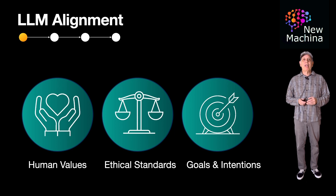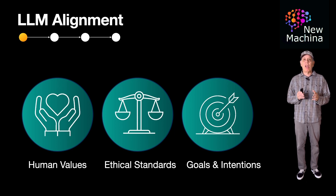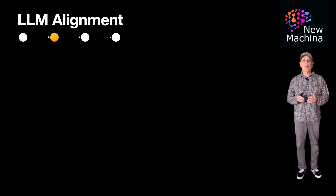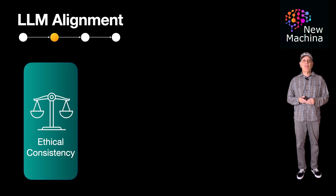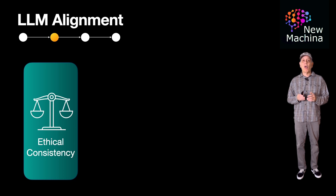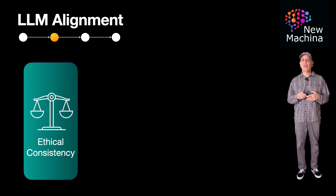Let's go deeper into what are the key aspects of LLM alignment. The first is ethical consistency. This involves ensuring the LLM doesn't produce harmful, biased, or unethical content. This involves training the LLM to avoid inappropriate language, misinformation, or harmful stereotypes.